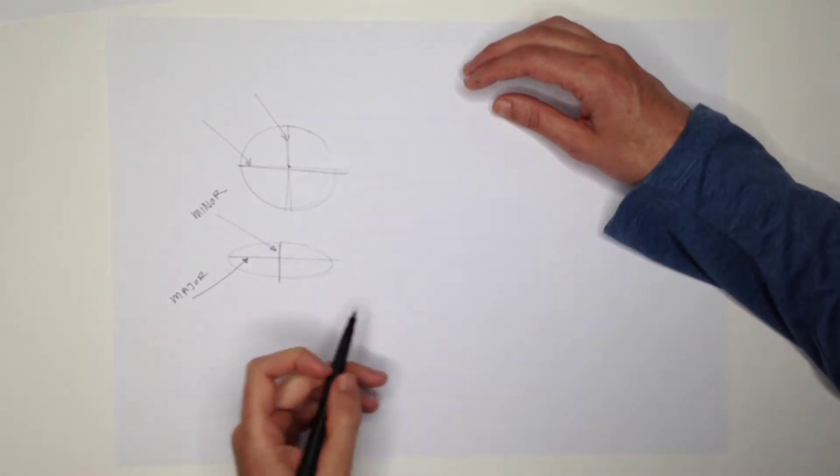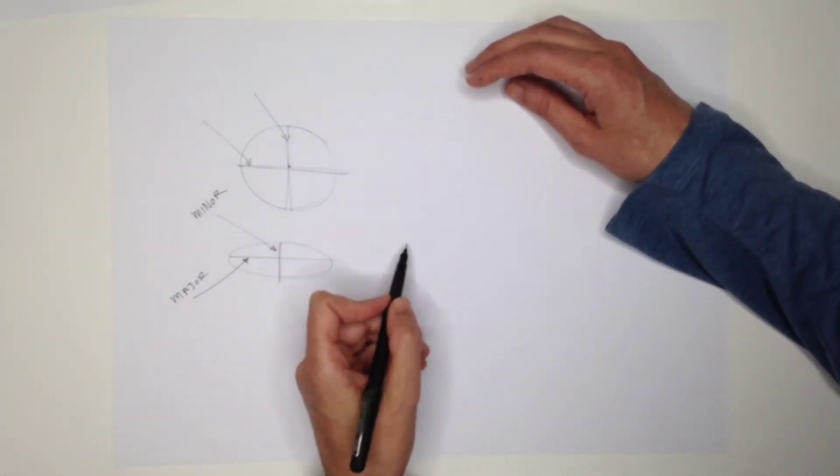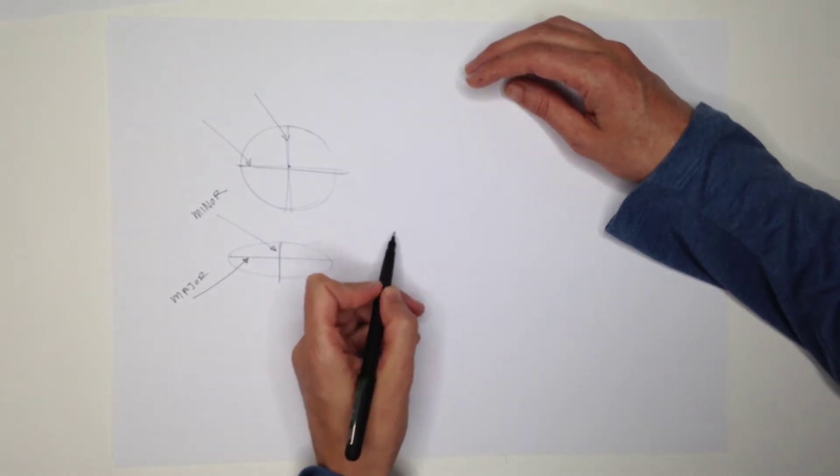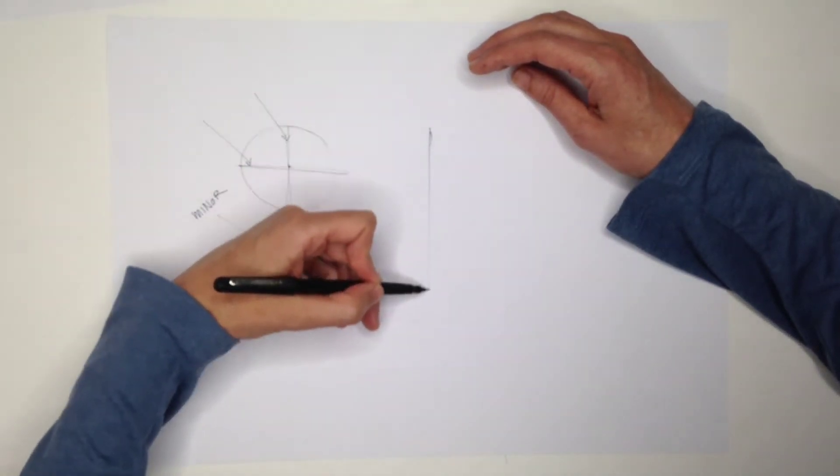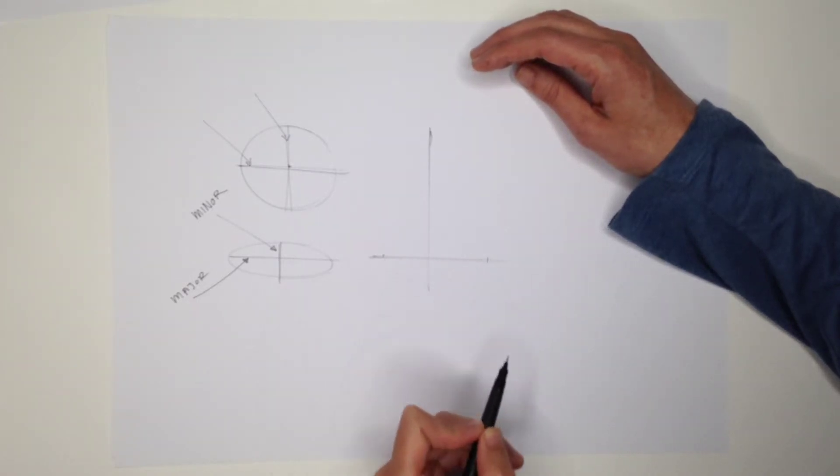The basic rule is that the major axis is perpendicular, it's 90 degrees to the rotational axis of any cylinder.